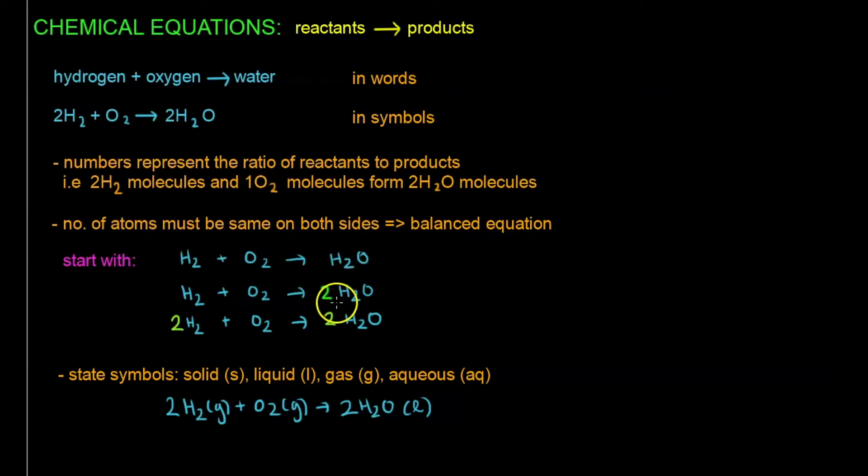2 times O gives us 2O, right. But when I write this green 2 in, I realize that I have now 4 hydrogen. Because this 2 will multiply this H2 as well, giving us 4 hydrogen atoms.